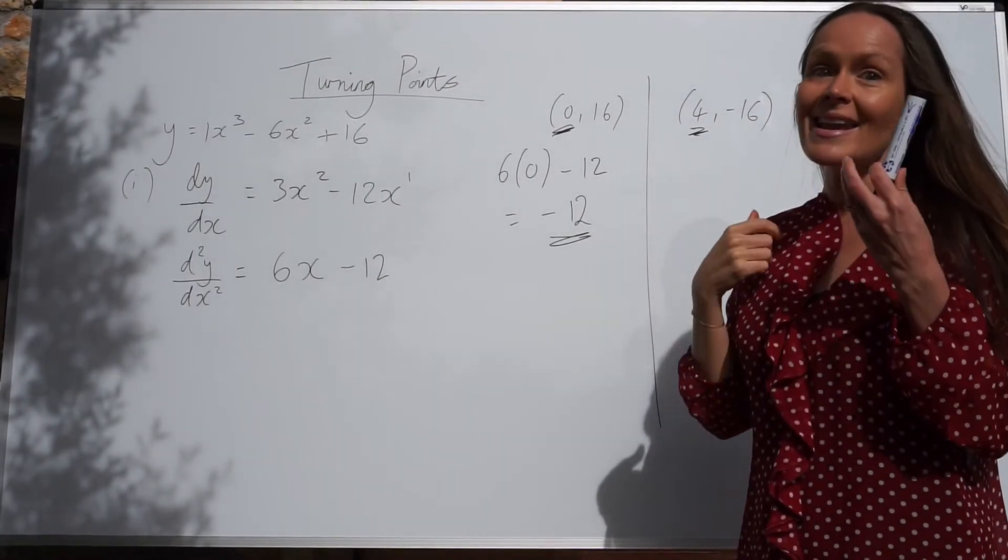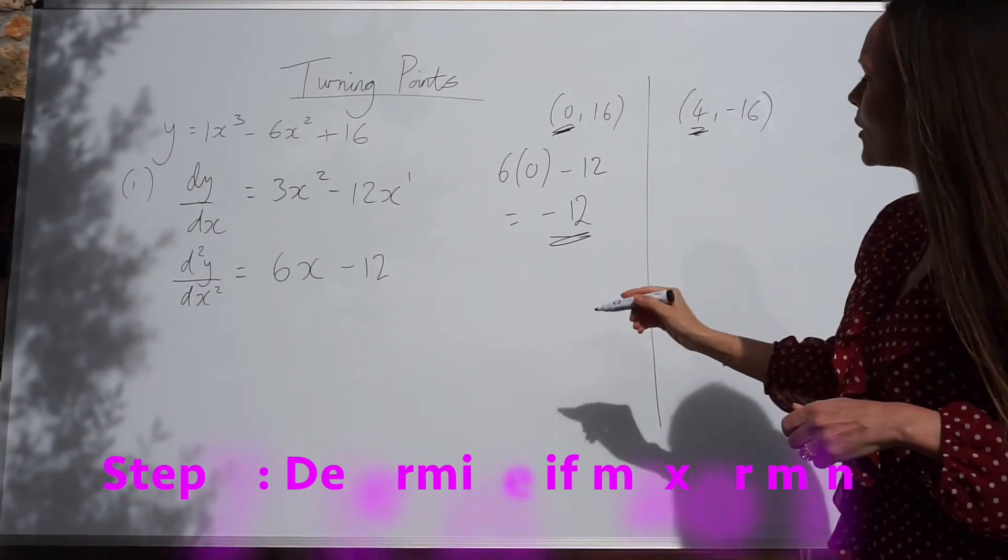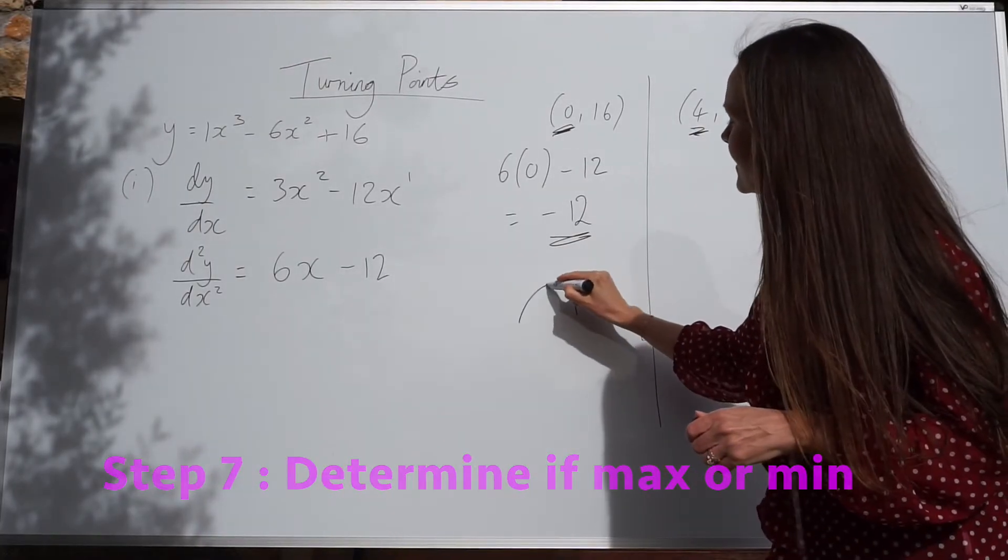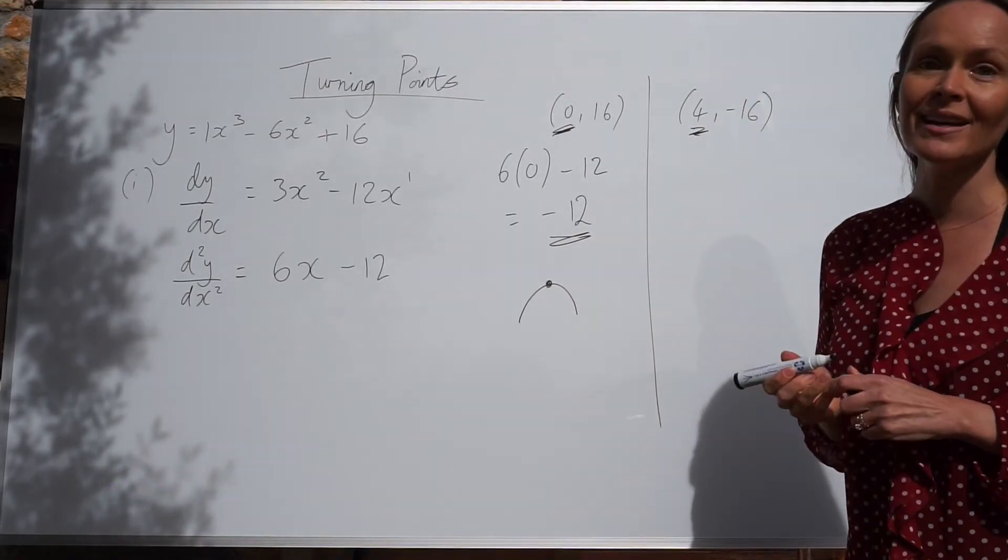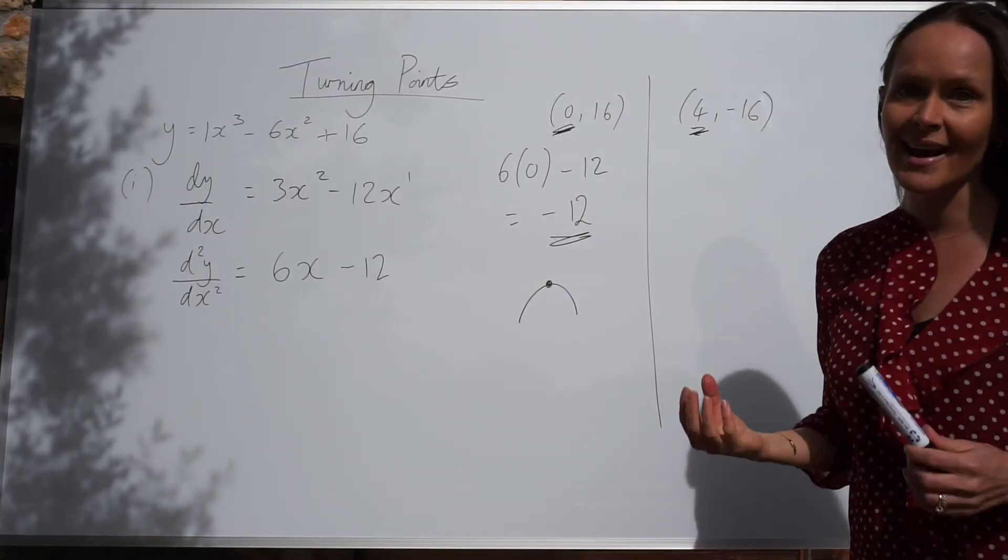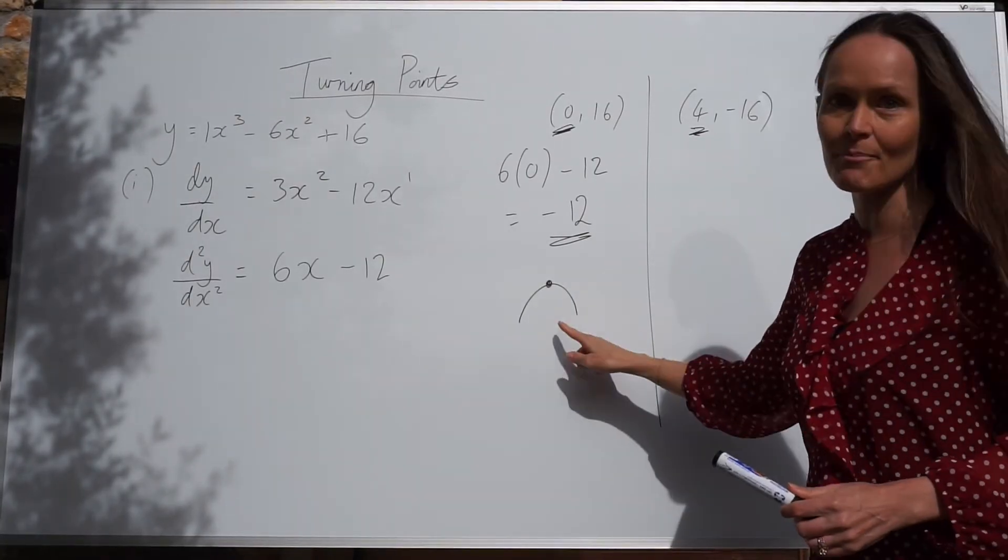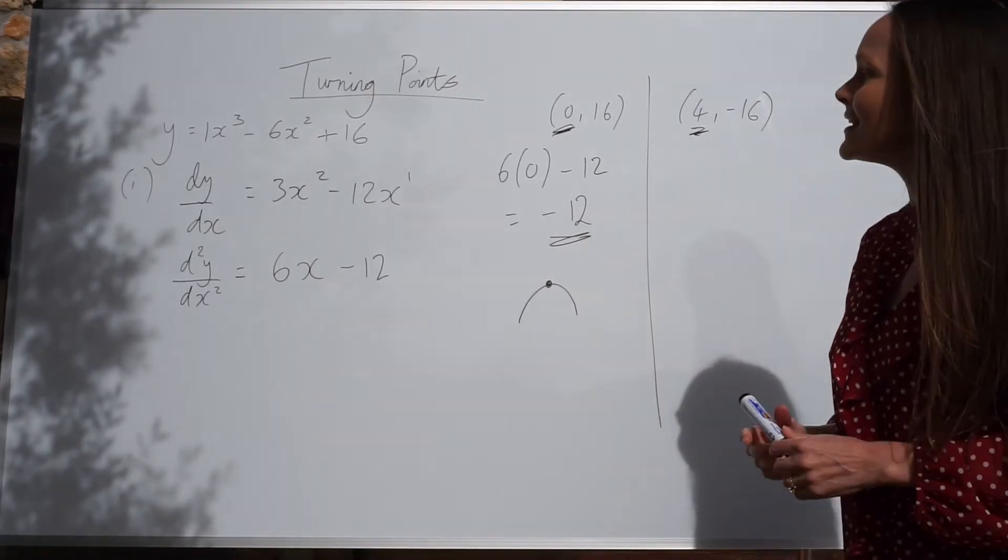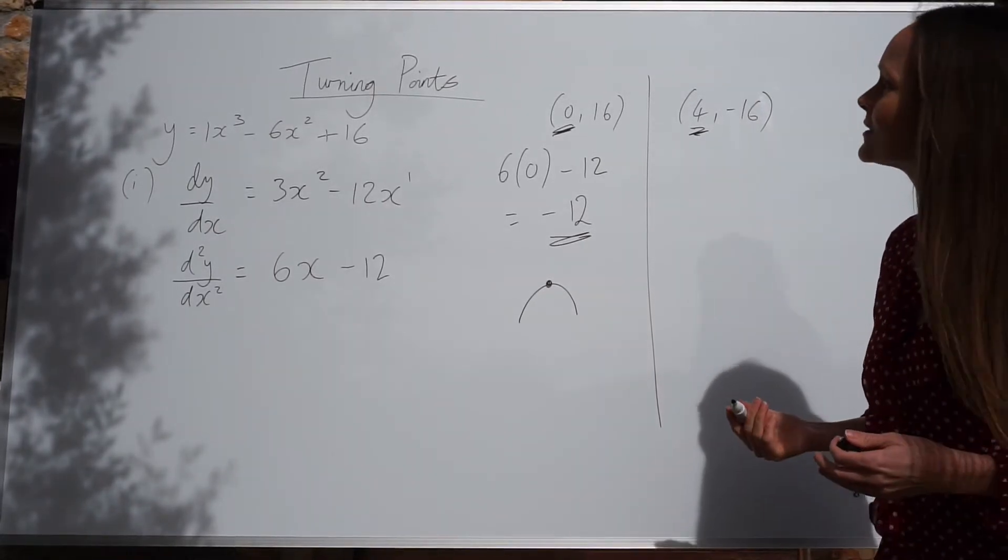Because this is a negative number, we know that this turning point is a maximum. So if that answer is a negative number, it means it's a maximum turning point.